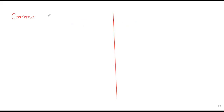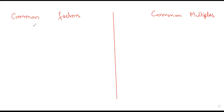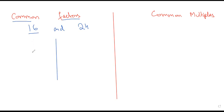The next very simple topic is common factors and common multiples. Let's say we have sixteen and twenty-four and we want to find the common factors. We write down the factors of both numbers and find the common ones. What are the factors of sixteen?